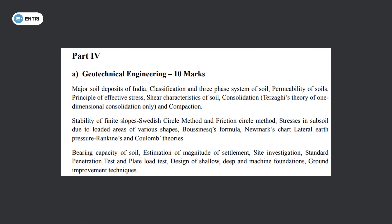Part 4 is Geotechnical Engineering, worth 10 marks. Topics: major soil deposits in India, three-phase system (solids, voids, air), permeability, effective stress, shear strength, consolidation and compaction. Finite slope analysis — Swedish circle method, friction circle method. Boussinesq formula and Newmark's chart. Earth pressure — Rankine's and Coulomb's theory. Bearing capacity of soil, settlement analysis. Site investigation: SPT, plate load test. Shallow, deep, and machine foundation design. Ground improvement techniques.